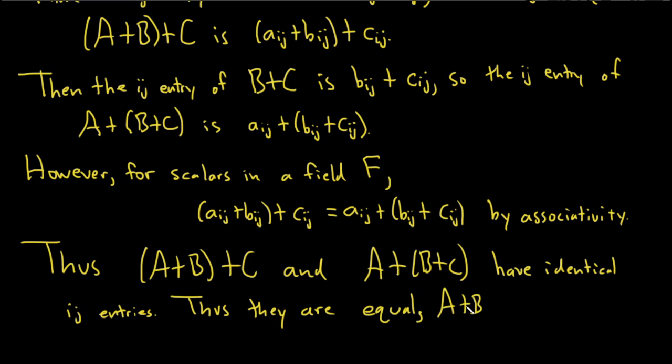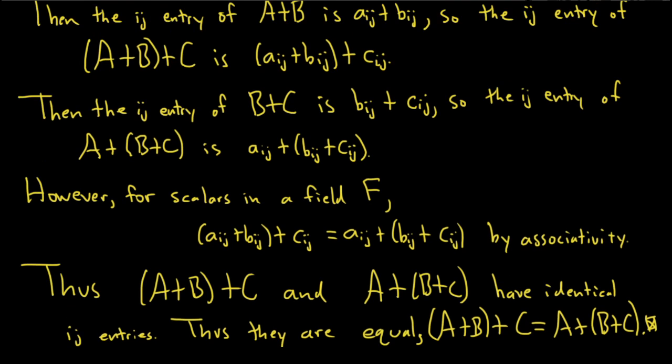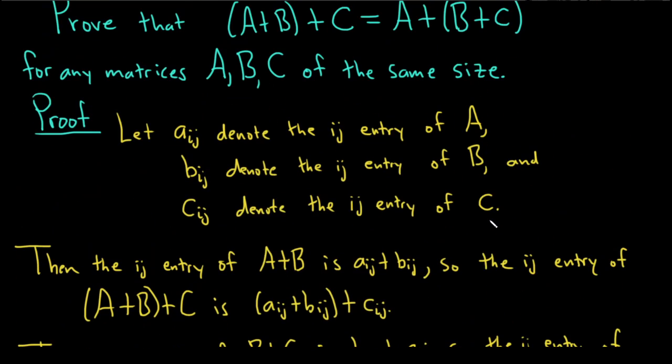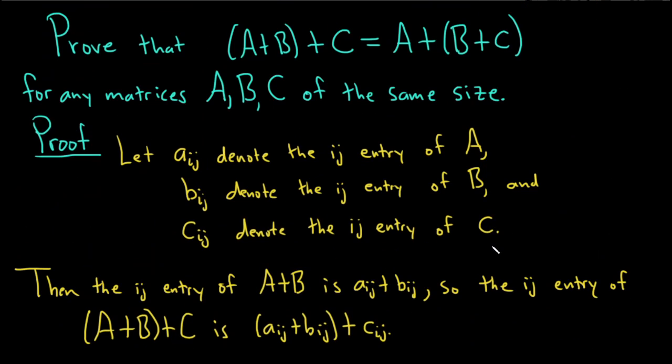So I'll go ahead and write the final statement, (A+B)+C equals A+(B+C). And I know I wrote a lot in this problem. You can get by with less, but I don't know. It's a very fundamental property. It's a very basic property. So I wanted to give a more careful proof of it. So hopefully this has been helpful to someone out there in the world who is trying to do this. Good luck. Take care.